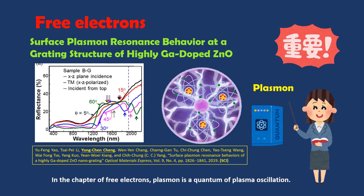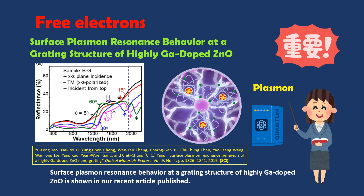In the chapter of Free Electrons, a plasmon is a quantum of plasma oscillation. Plasmons are collective oscillations of free electron gas density. Surface plasmon resonance behavior at the grating structure of highly doped oxide is shown in our recent published article.